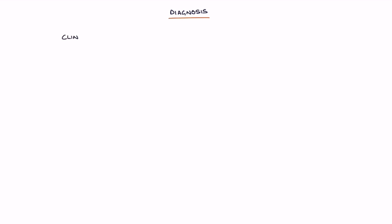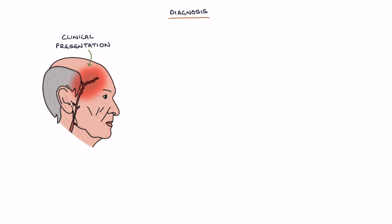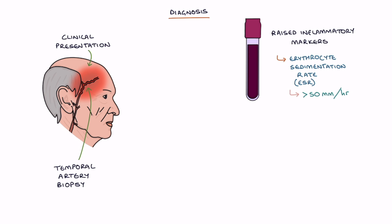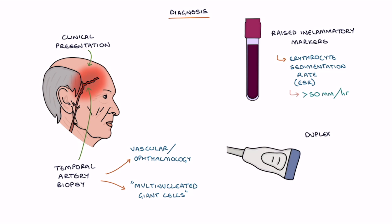Let's talk about making the diagnosis. The diagnosis is based on the clinical presentation — the signs and symptoms — raised inflammatory markers, particularly erythrocyte sedimentation rate or ESR, which is usually more than 50 millimetres per hour, a temporal artery biopsy performed by a vascular surgeon or ophthalmologist, which under a microscope shows multinucleated giant cells, and a duplex ultrasound scan which can show the hypoechoic halo sign and stenosis of the temporal artery.